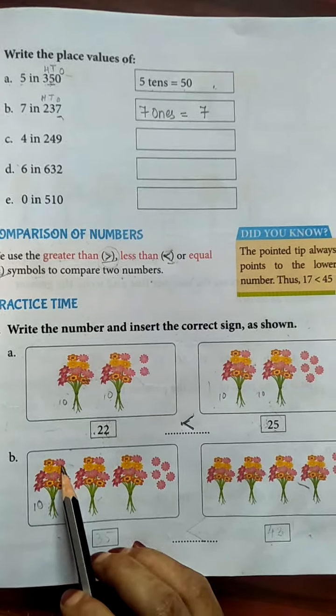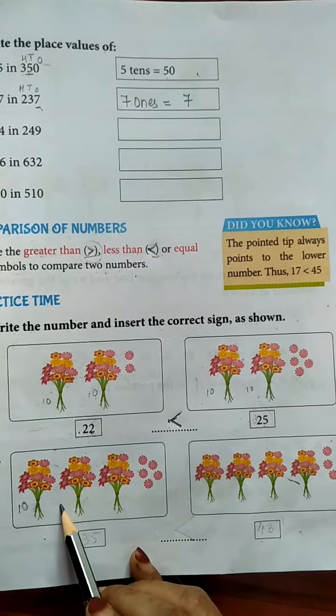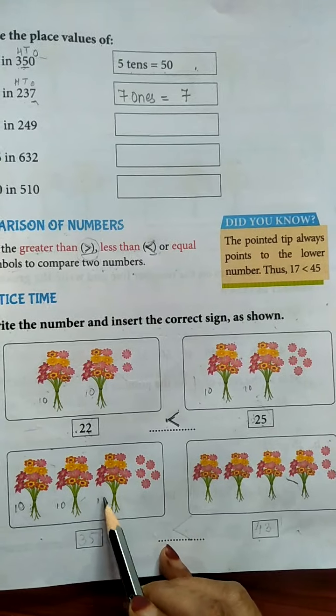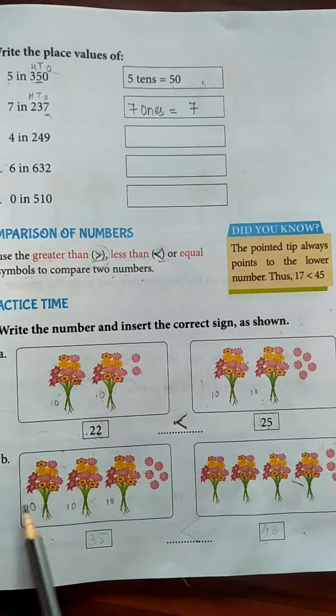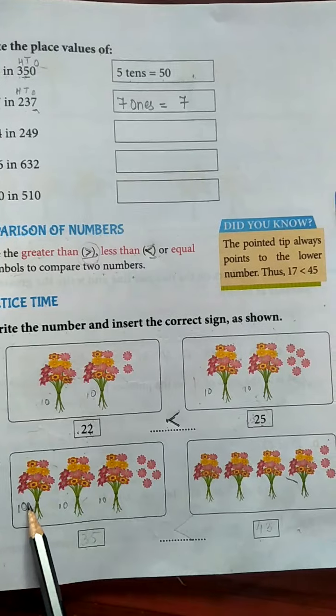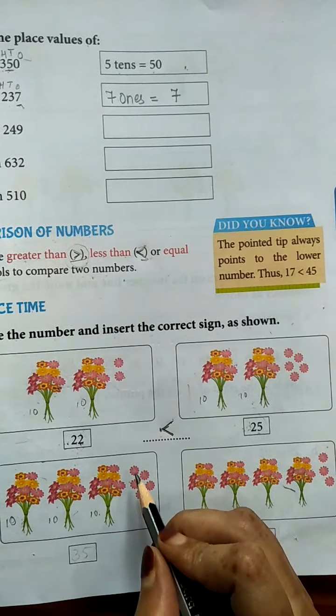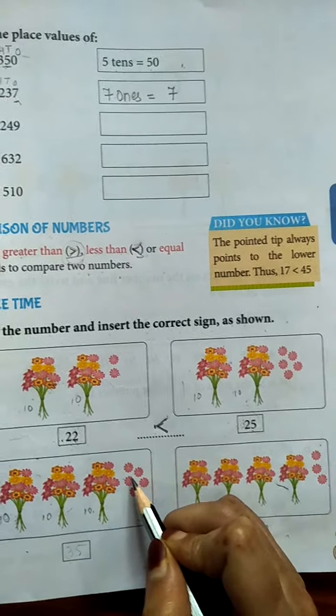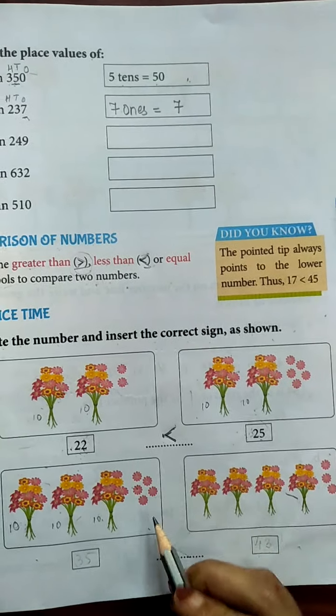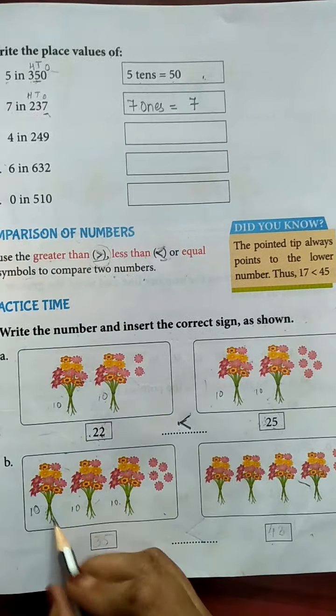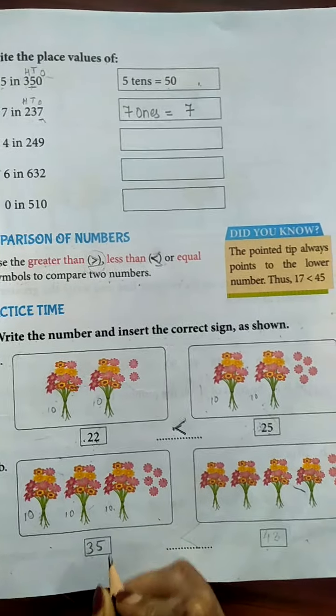Again 10 flowers, 10 flowers. 10 plus 10 plus 10. 10, 20 and 30, 31, 32, 33, 34 and 35. So write here 35.